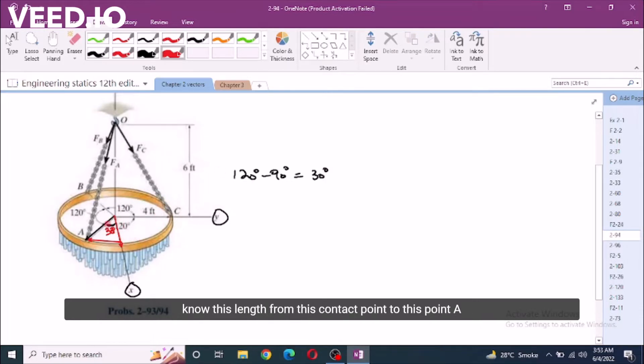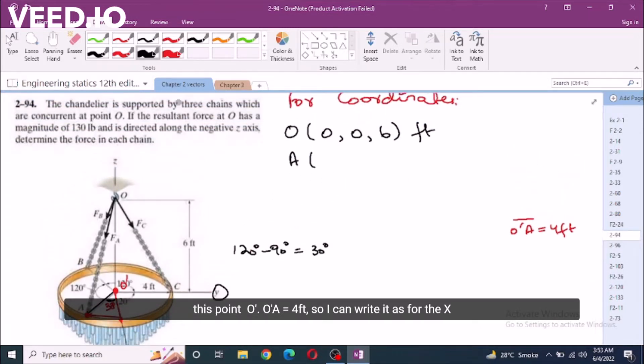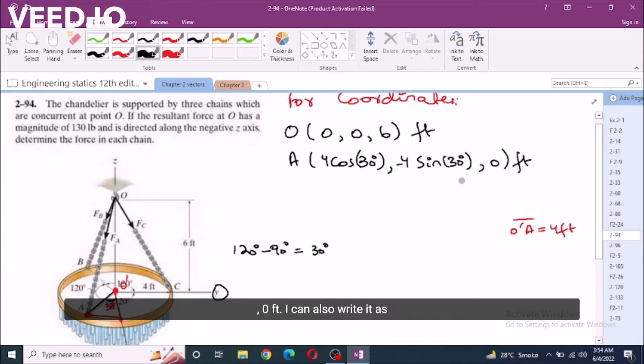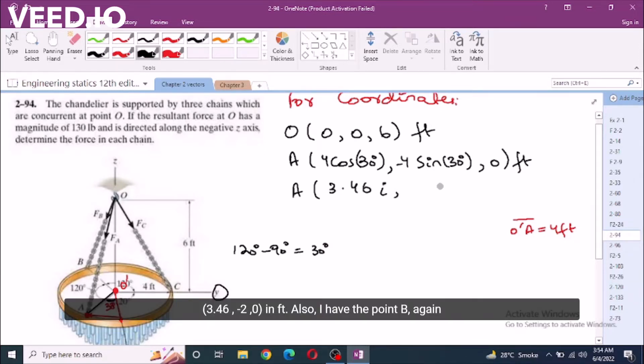Also, I know this length from this contact point to point A which is 4 feet because it is a circular ring. So let's call this point OA. So OA is equal to 4 feet. So I can write it as, for the X coordinate, I have 4 cos 30 degrees. Now, the Y coordinate is directed in the negative sense. So I have -4 sin 30 degrees, 0 feet. I can also write it as (-3.46, -2, 0) feet.